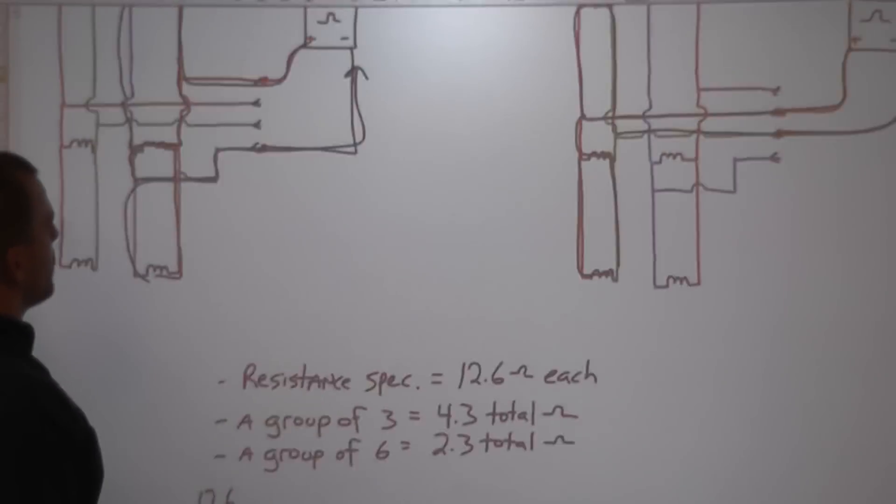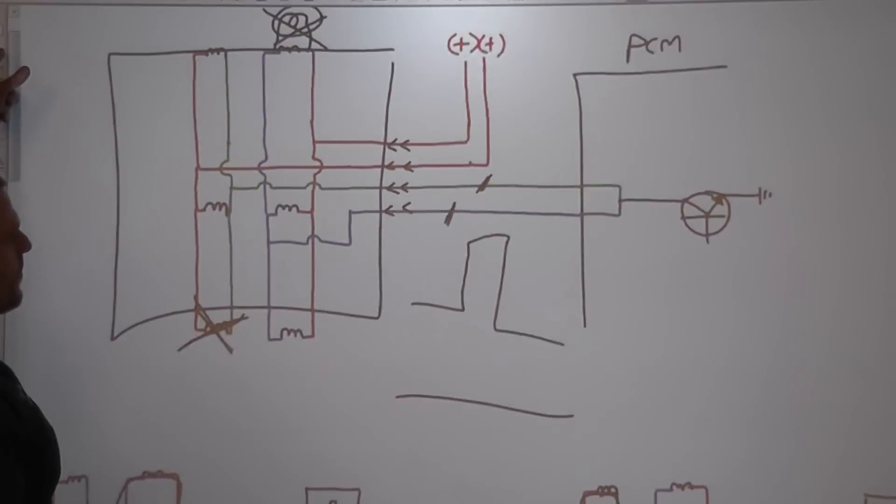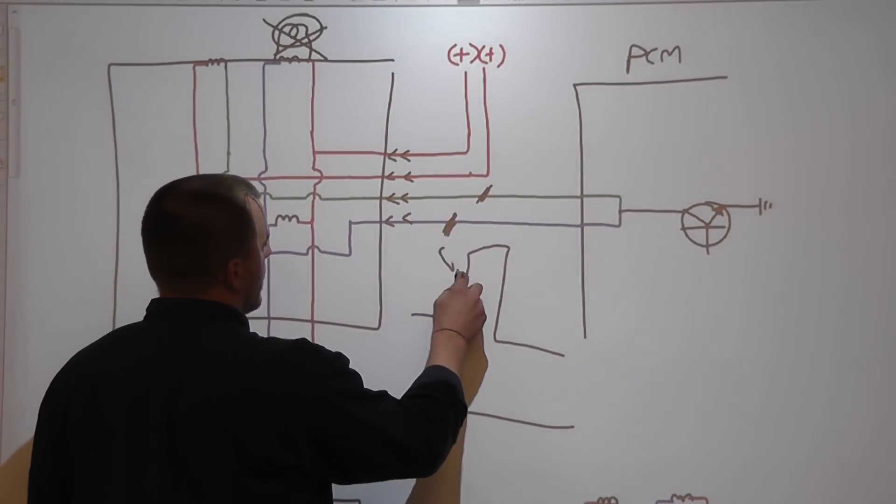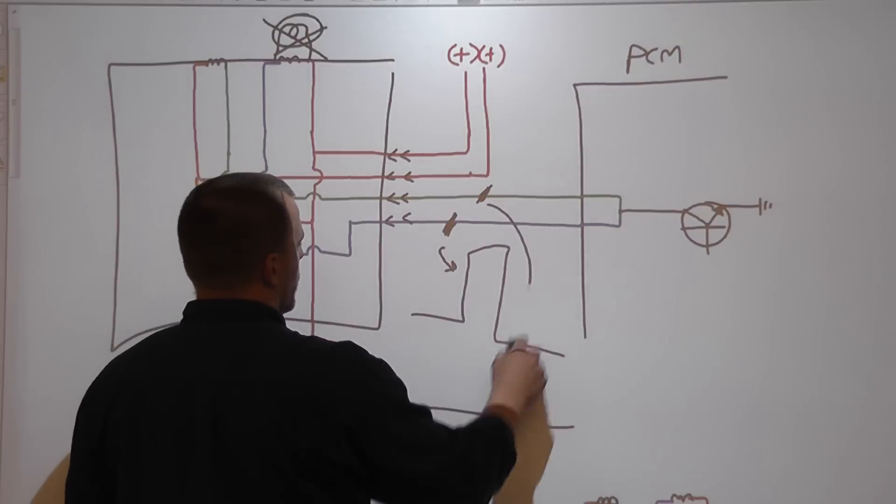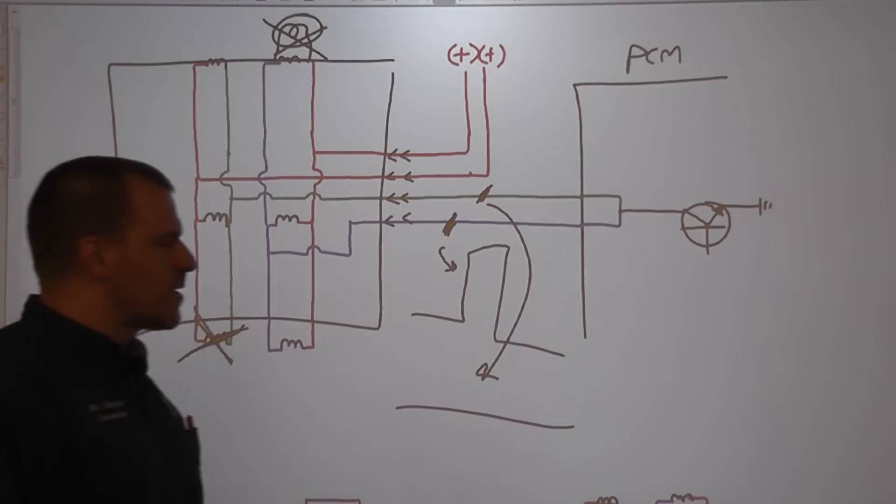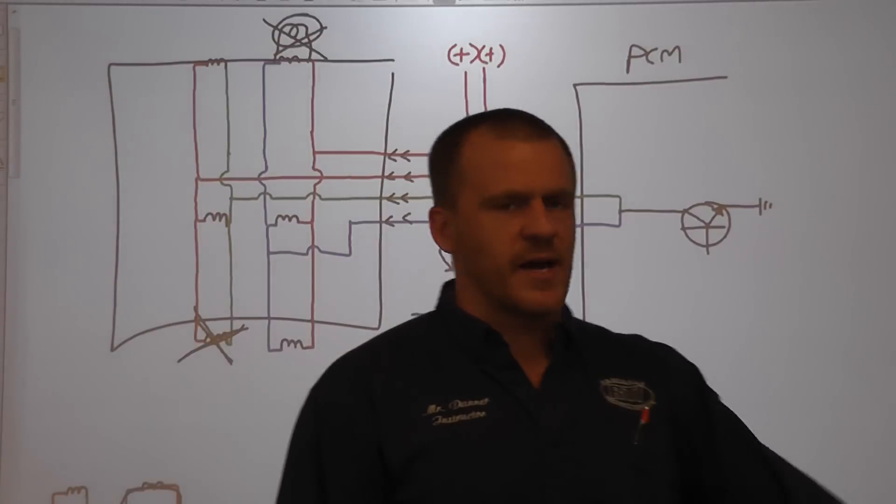Clearly, the scope was the best method. You know, we put an amp probe on here, get a reading, right? Put an amp probe on here, get a reading. That was key. Injector current ramp testing. Shorted Multec injector GM.